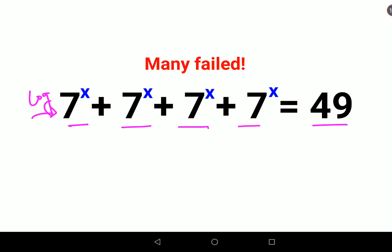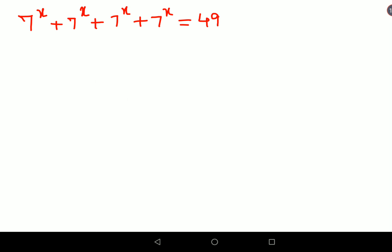Let's try and simplify this as much as possible and then let's get back to the log if needed. Here what we can do first is we'll take 7^x common, so we are left with 1 + 1 + 1 + 1. This equals 49.